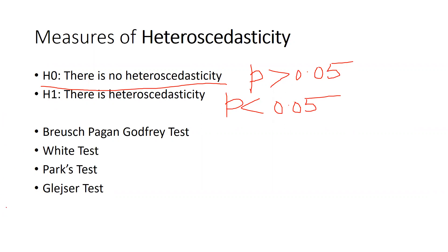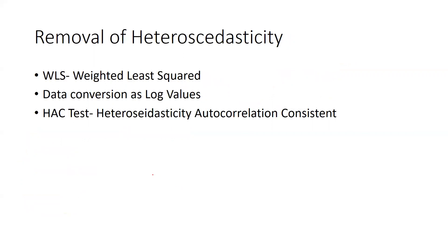There are a number of tests available in eViews to measure heteroscedasticity. We will discuss the Breusch-Pagan Godfrey test, the White test, the Park test, and the Glejser test. We will run all these tests in eViews one by one.